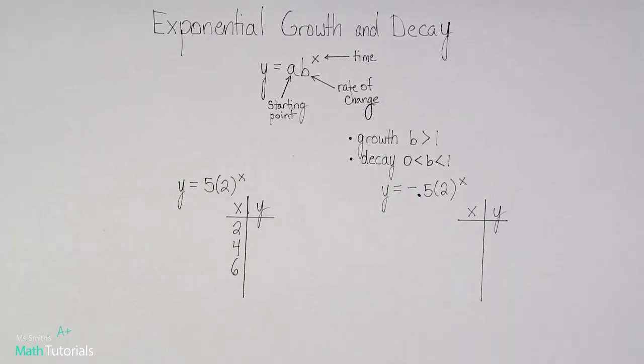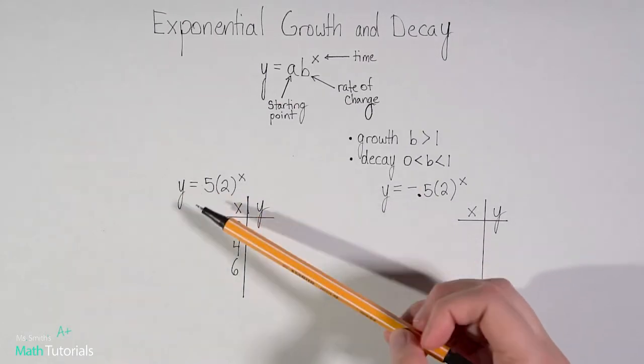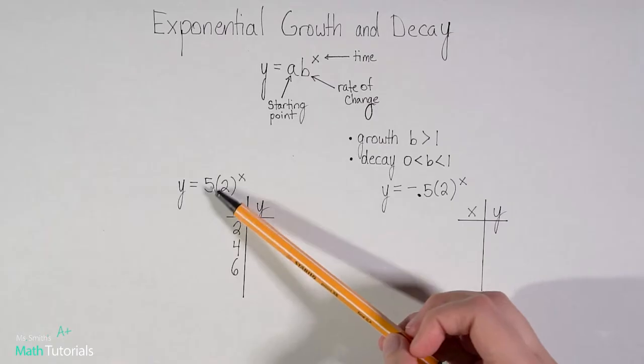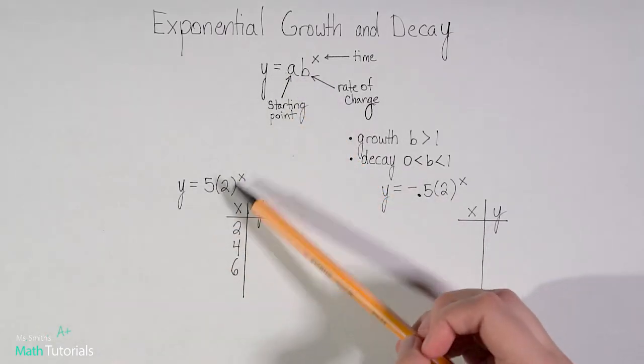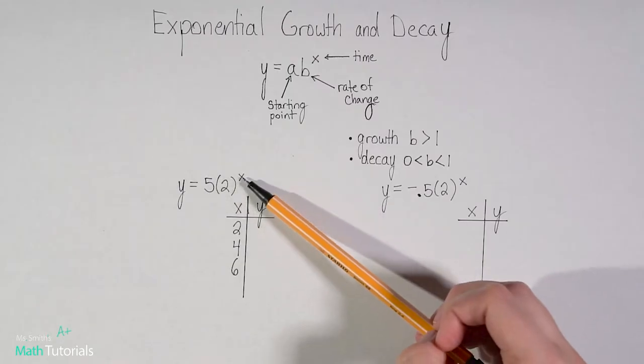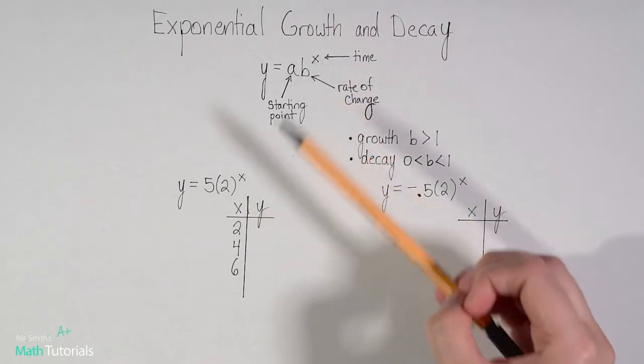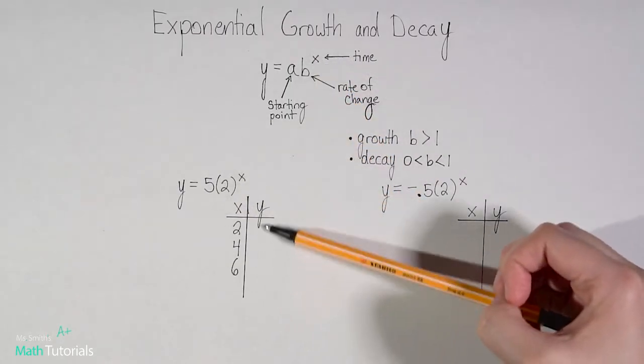We're going to look at just a couple examples of us using the formula and subbing some different things in. Let's look at this example. y equals 5 times 2 to the power of x. So 5 is our a, 2 is our b, and we're going to sub some things in for x to see what we get for y.